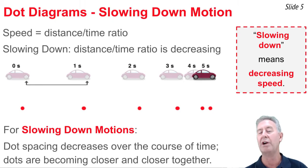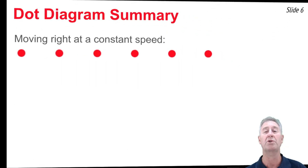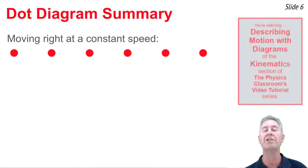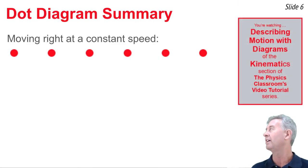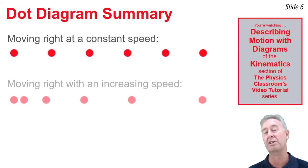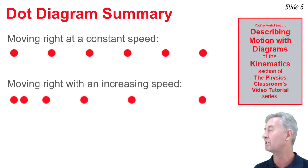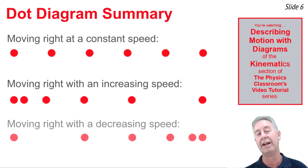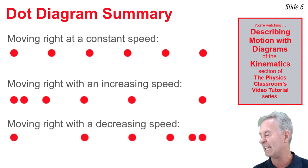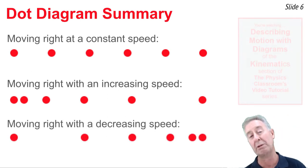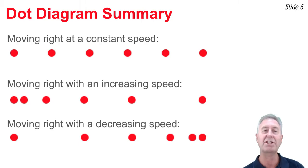So now we've seen constant speed, speeding up, and slowing down motions. Here's a summary: constant speed has a constant distance or spacing between consecutive dots; increasing speed has an increasing spacing; and decreasing speed has a decreasing spacing between dots. That's a summary of dot diagrams.